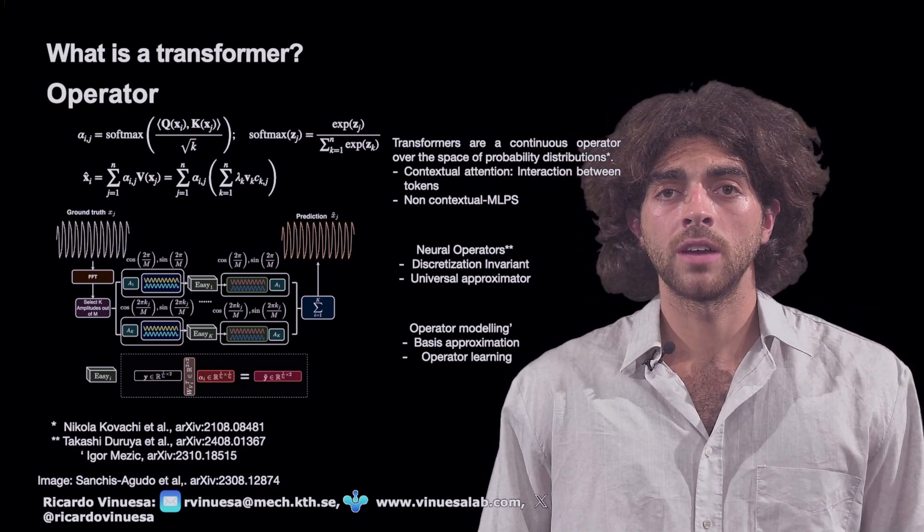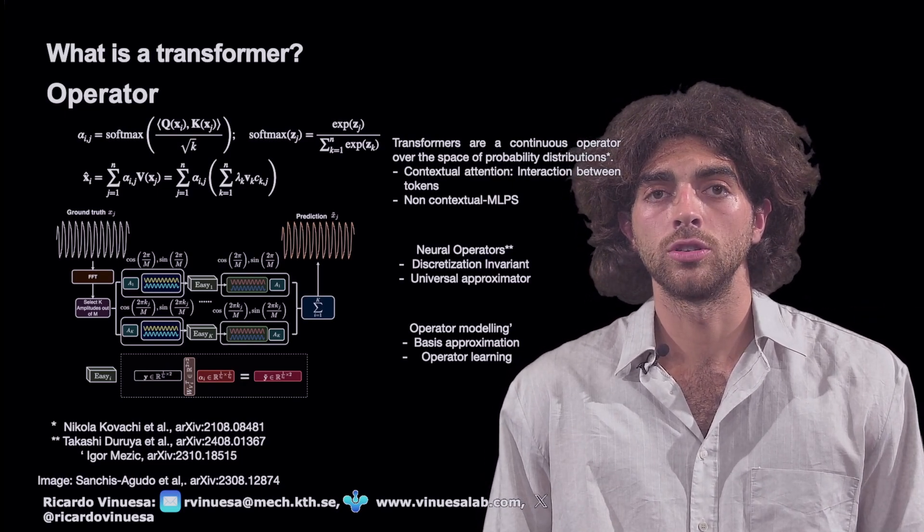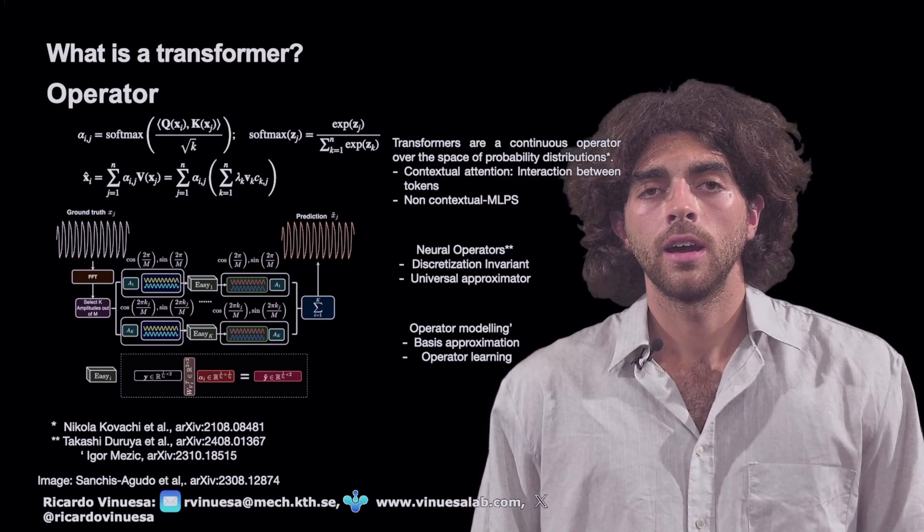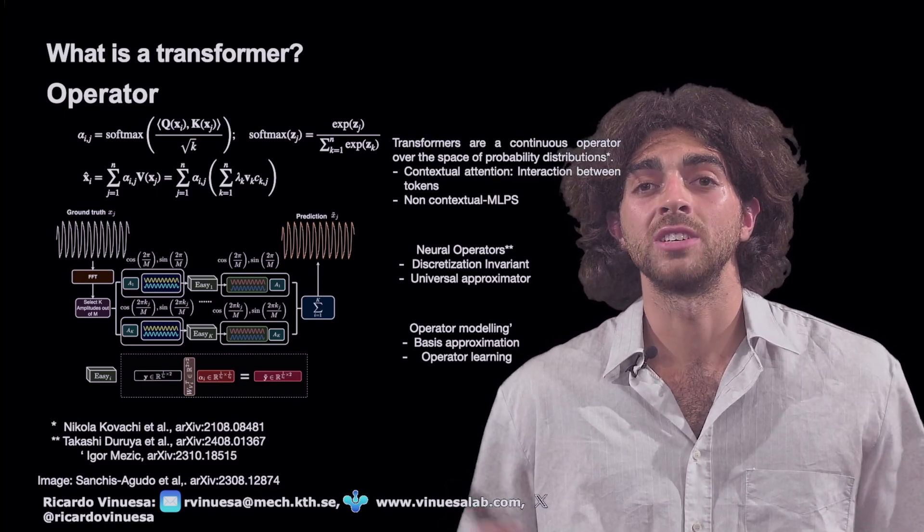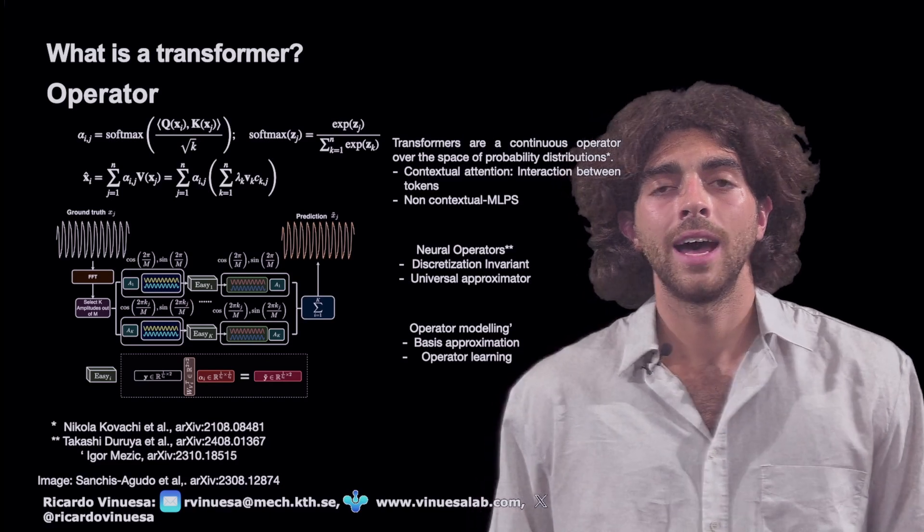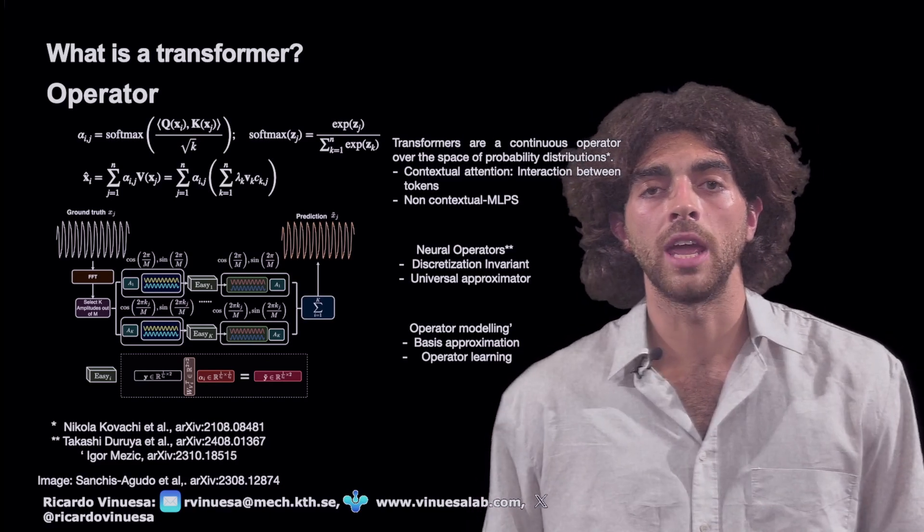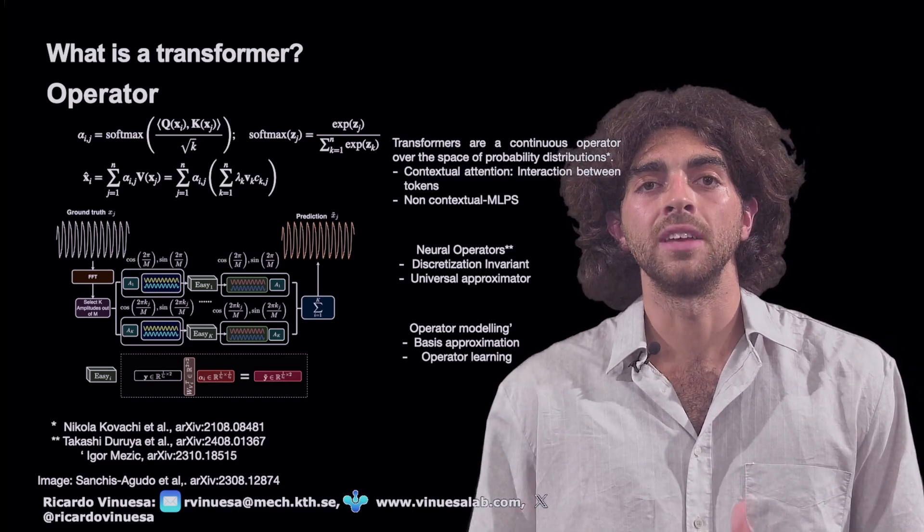However, neural operators have the limitations that are not contextually dependent. The attention mechanism, the alpha matrix is composed of the queries and the keys, as we introduced in the past video, and these queries and keys are fully dependent on the input, meaning that they have context information.